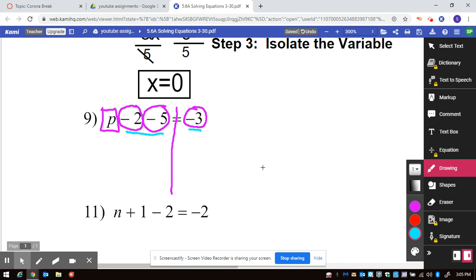So I need to combine these and move them over. You could move them over one at a time. Personally, I like to combine them together and move them as one lump sum. So negative 2 minus 5 is negative 7. I haven't done anything with the p. I'm going to drop it down, drop the equals, drop the negative 3.